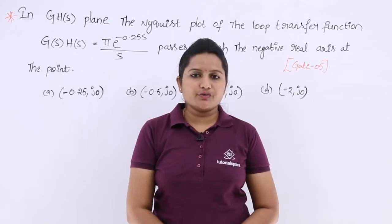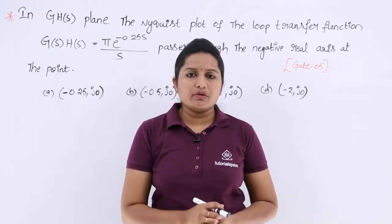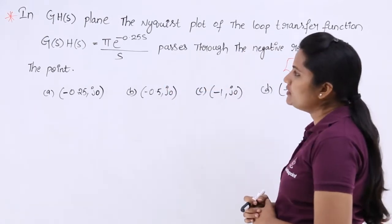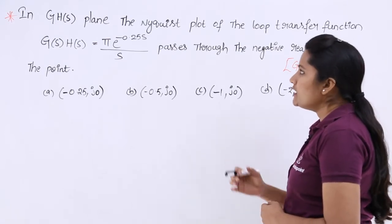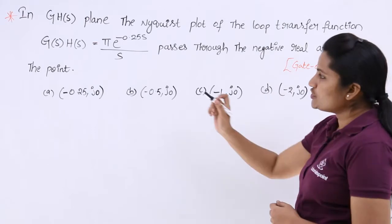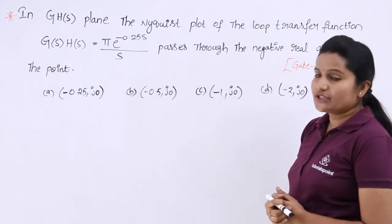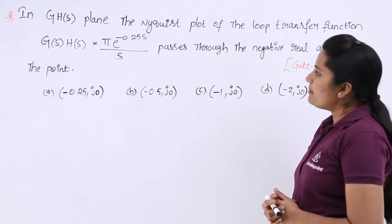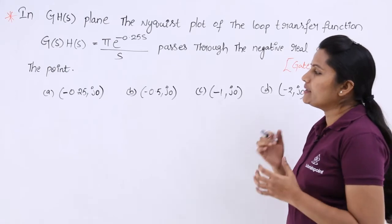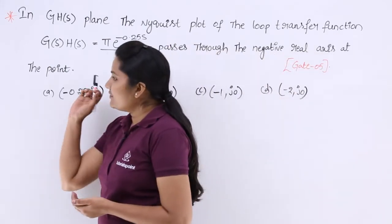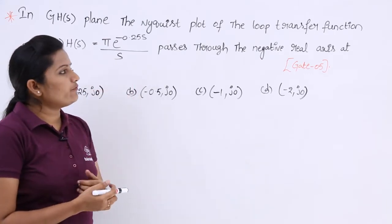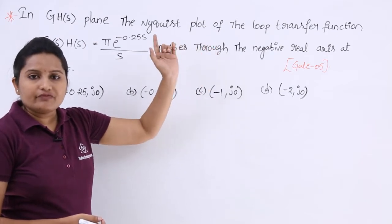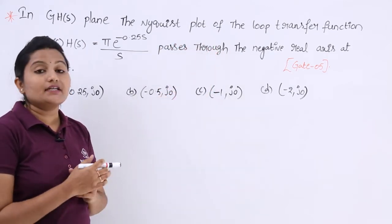In this video, we are going to discuss one more GATE problem related to frequency response analysis. We can observe the problem here. The Nyquist plot of the loop transfer function G(s)·H(s), which is equivalent to π·e^(-0.25s)/s, passes through the negative real axis at which point? So, if this is the transfer function of a system, we need to find at which point it will pass the negative real axis.